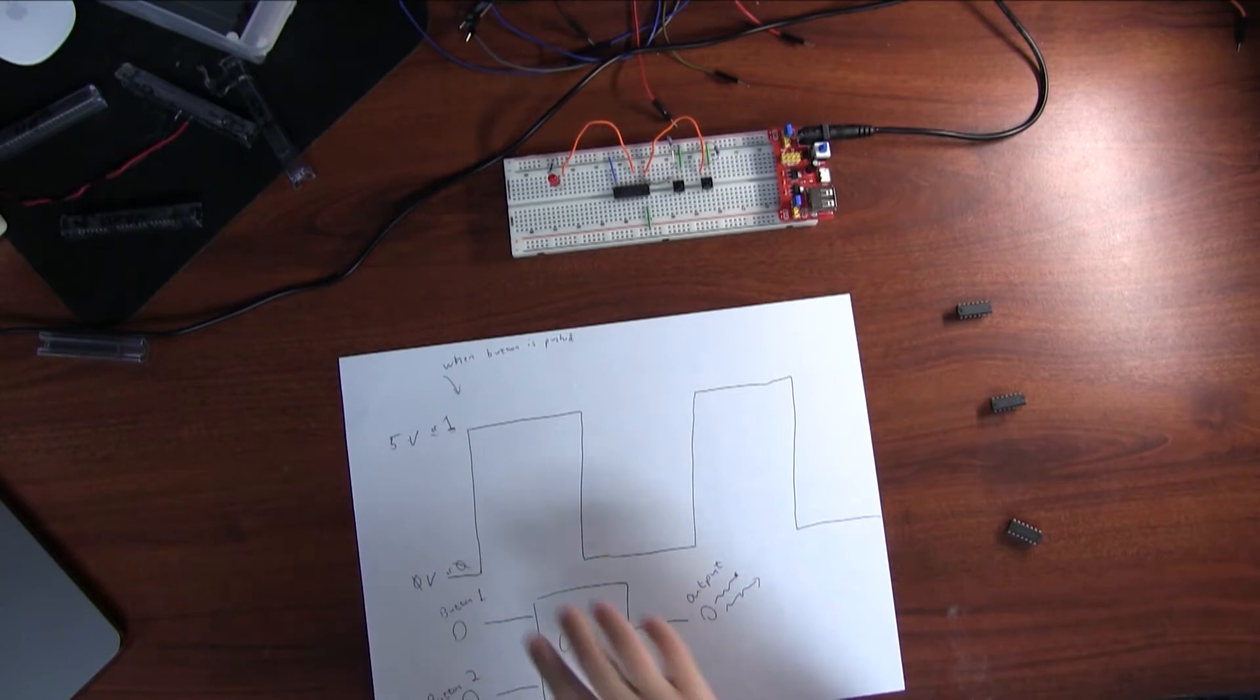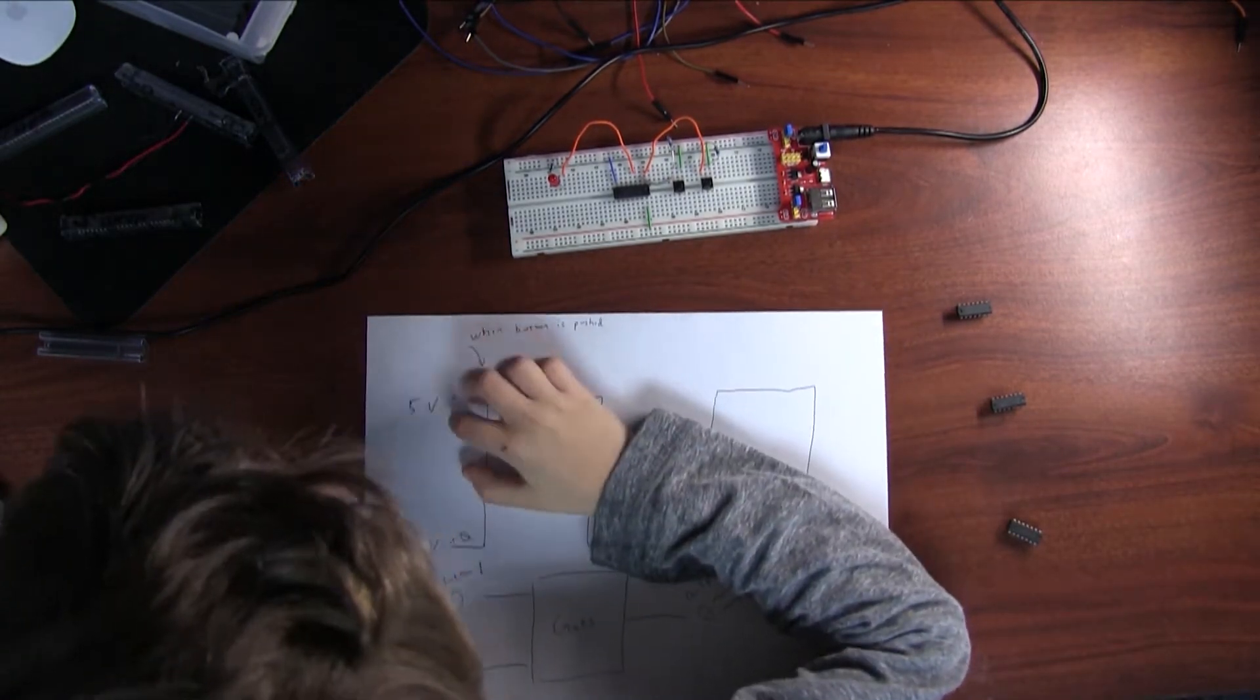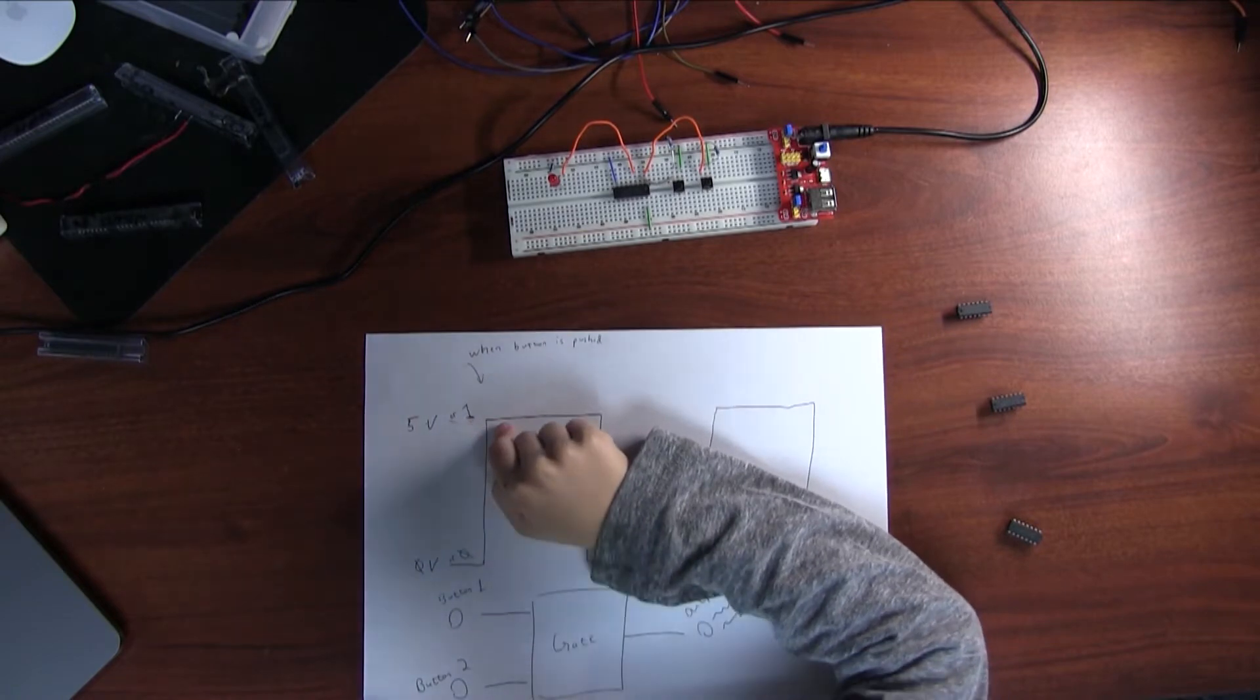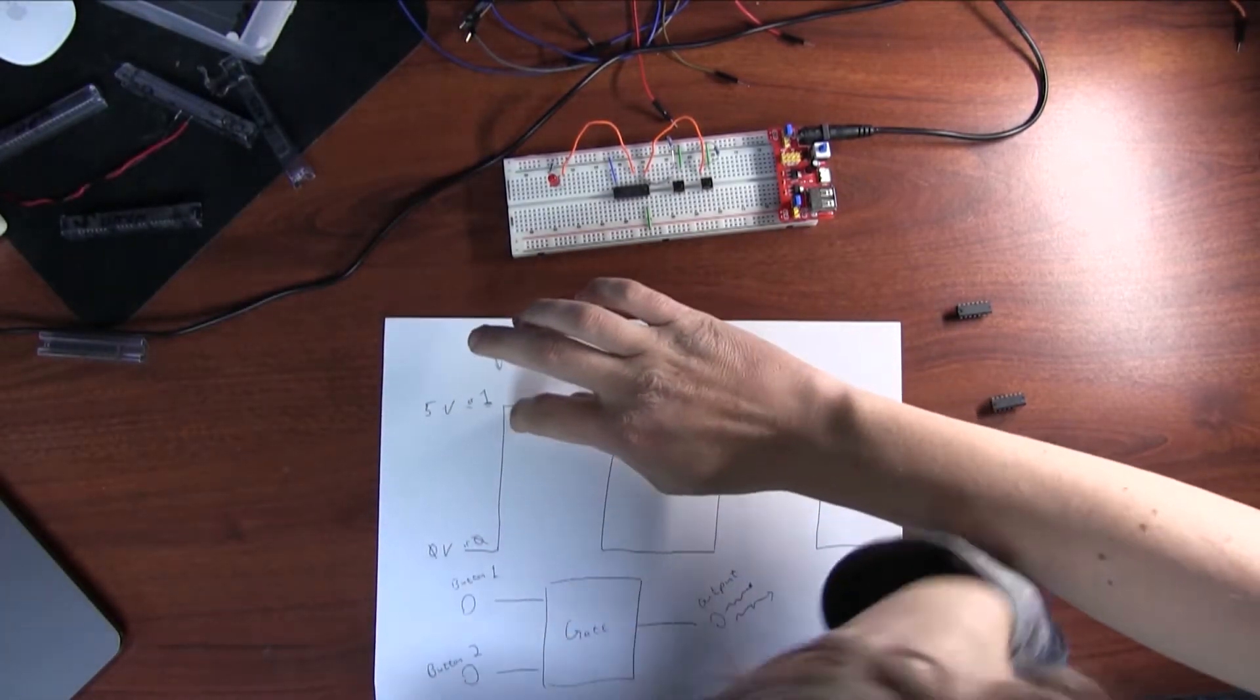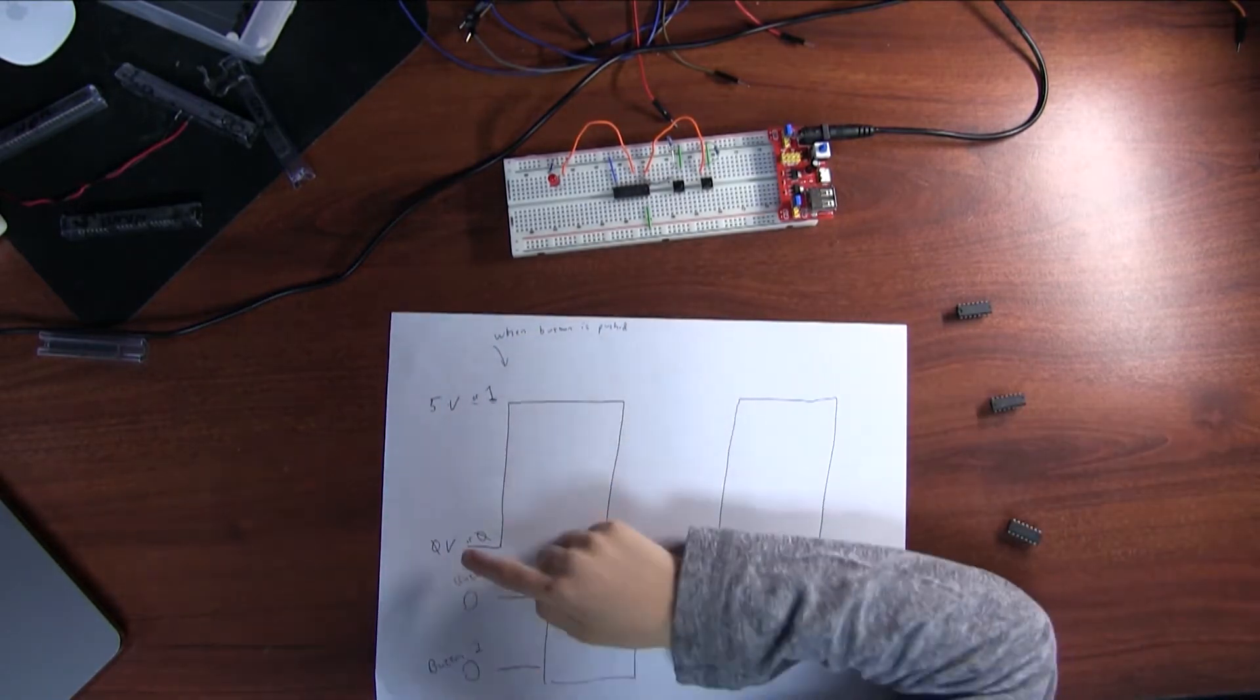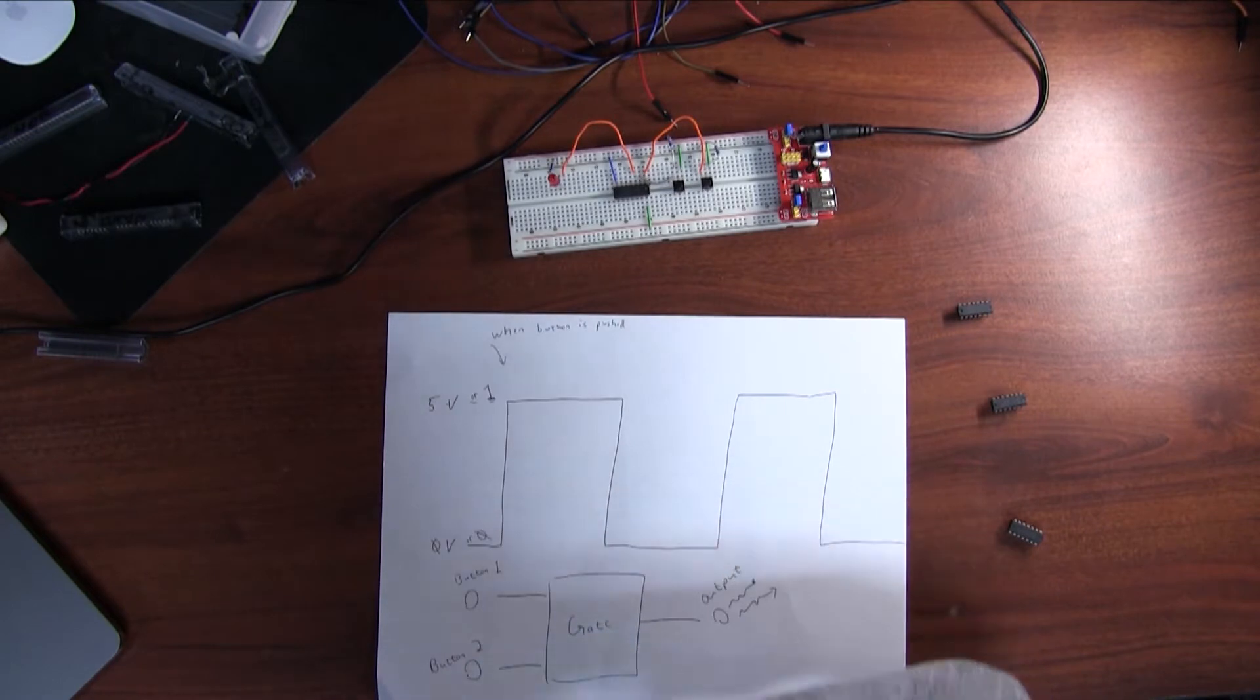When you push the button, the voltage goes to five volts, which in digital is one. It's zero volts or zero volts.